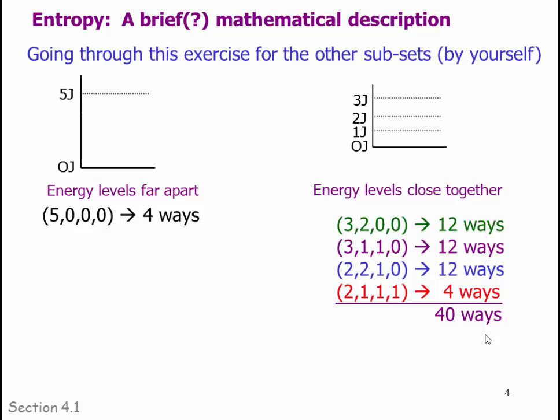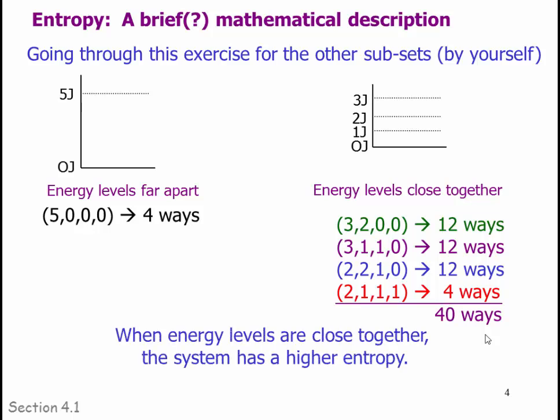Comparing the two systems: when energy levels are far apart, there are 4 ways; when energy levels are close together, there are 40 ways. So obviously the system on the right has a great deal more entropy when the energy levels are closer together. This might be an example of water in the liquid state going to water in the gaseous state — gas is considered to be a much higher entropic system than liquid.